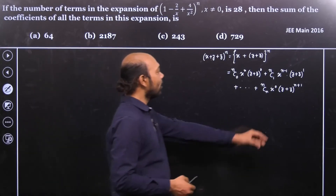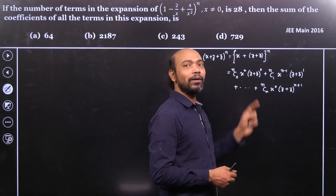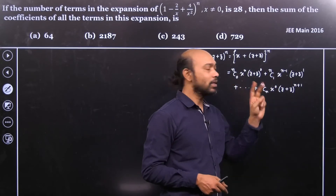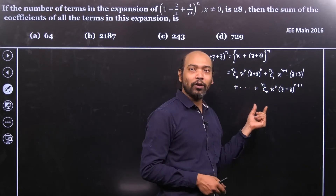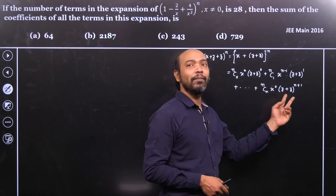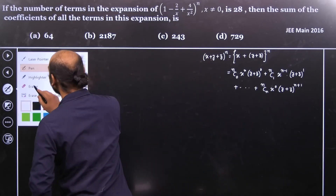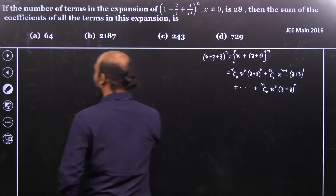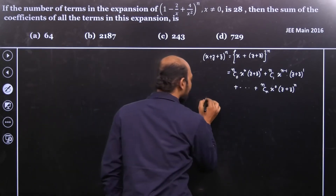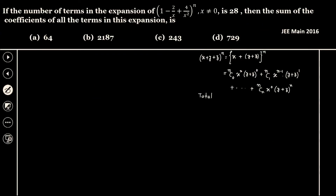Now, how many terms are present in this expansion? Here we have only one term — x to the power n. Here we have two terms. If we have a square, we have three terms. For x to the power n we have n plus 1 terms, and so on. So the total number of terms is equal to 1 plus 2 plus dot dot dot plus n plus 1.